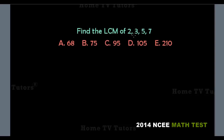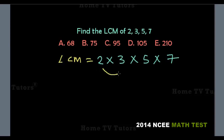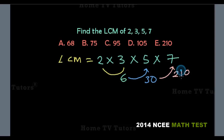Find the LCM of 2, 3, 5, 7. To find the least common multiple of a set of numbers, you multiply the numbers together. So the LCM is 2 times 3 times 5 times 7: 2 times 3 gives us 6, then 6 times 5 gives us 30, then 30 times 7 gives us 210. So the answer option E is the right answer.